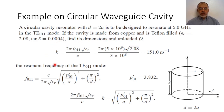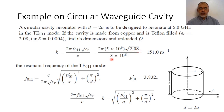We start by calculating the wave number inside the dielectric medium filling the cavity at the resonant frequency. The value of k is (2π f / c) multiplied by the square root of εr = 2.08, with c = 3 × 10⁸ m/s. The value of k in this case is 151 m⁻¹.